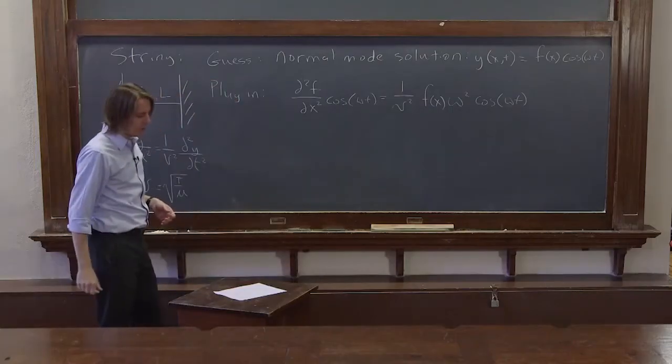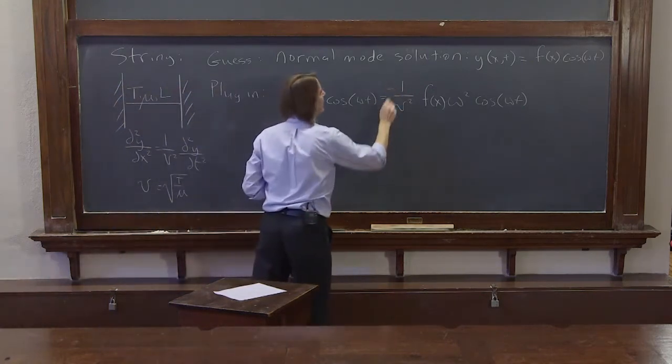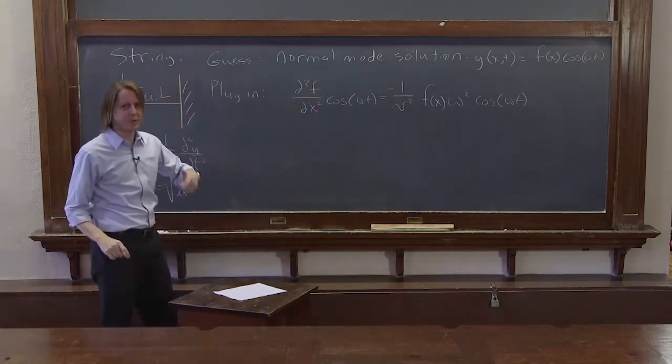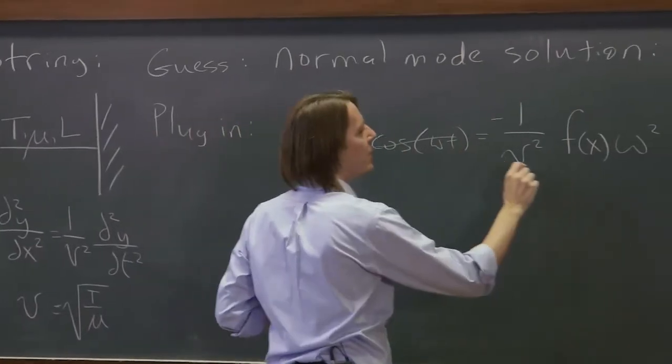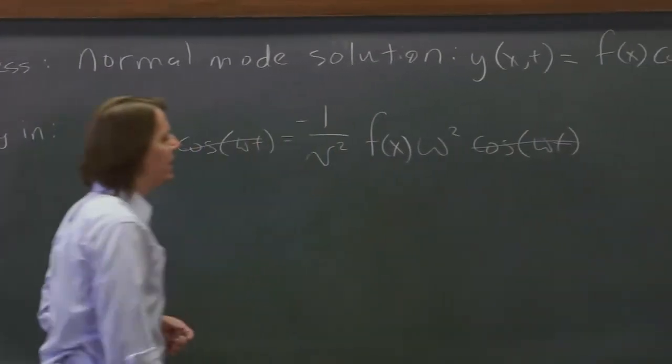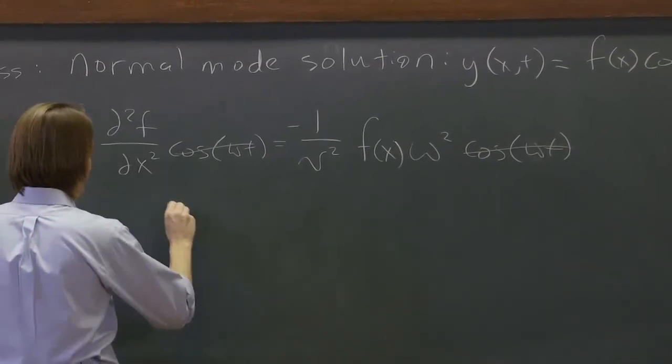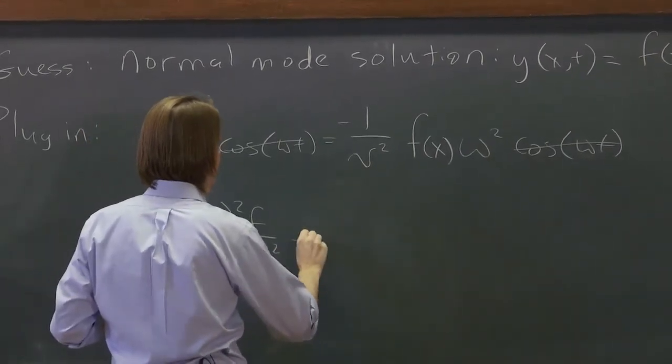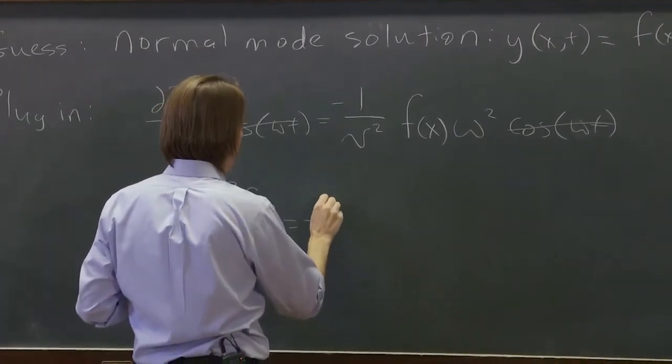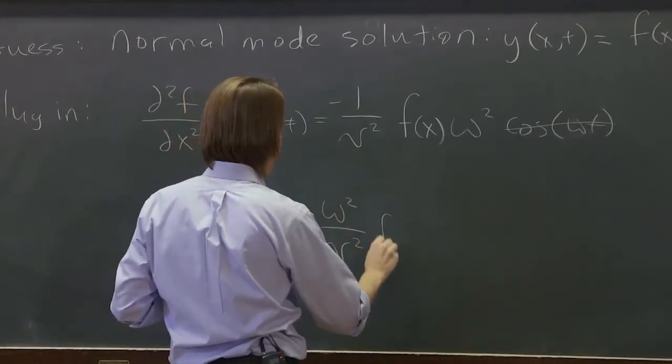So that's what happens when we plug in. And oh, it's negative. So yeah, there's a negative there. Two derivatives of cosine gets you back to negative cosine. Okay, so then some stuff cancels. So the cosine omega t goes away. And then we see what the equation told us. We plugged it in. The equation said that is a good guess if d2f/dx2 equals minus omega squared over v squared f of x.